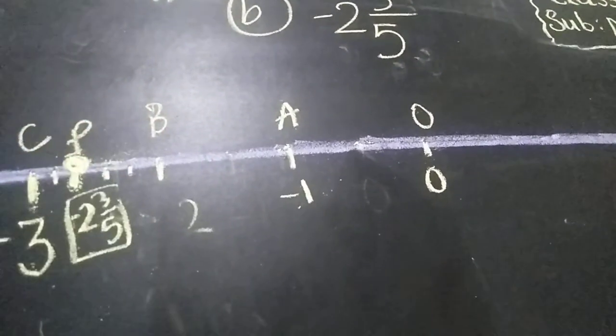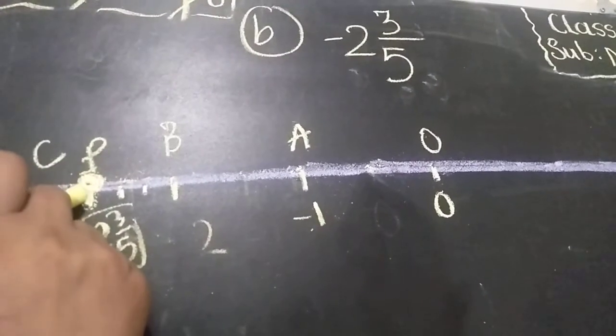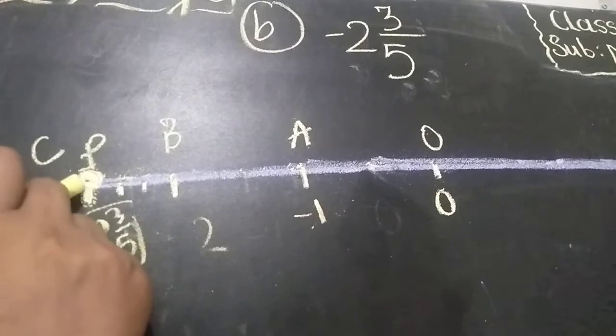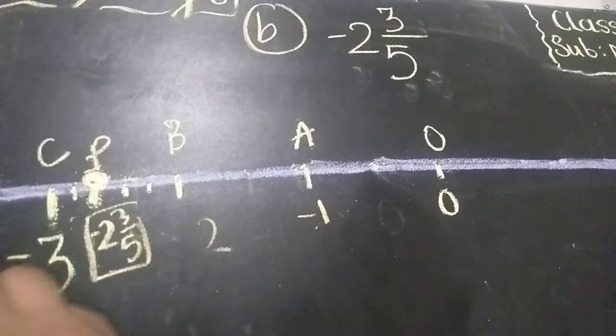So this P point, bachche, this P point represents minus 2, 3 by 5 on a number line. This represents minus 2, 3 by 5 rational number on a number line.